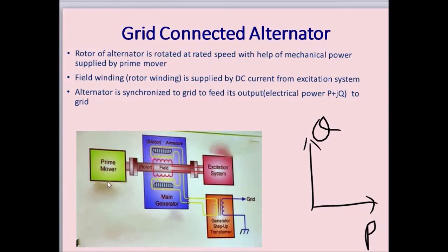This figure shows an alternator connected to the grid through a step-up transformer. The alternator carries a three-phase armature winding present on the stator, and that three-phase winding is generally star connected. This three-phase winding is connected to the grid through the step-up transformer, and the rotor of the alternator rotates at synchronous speed with the help of a prime mover. The rotor winding is supplied by DC current with the help of an excitation system.